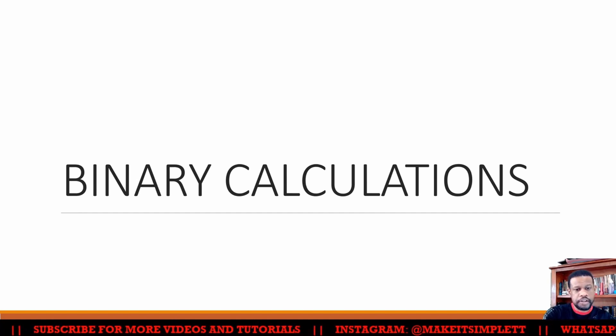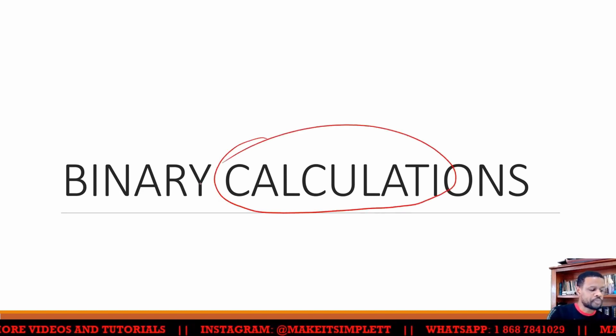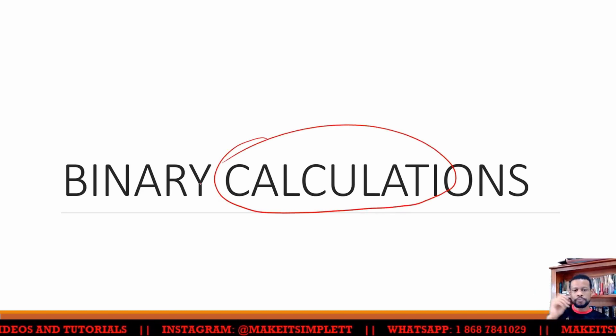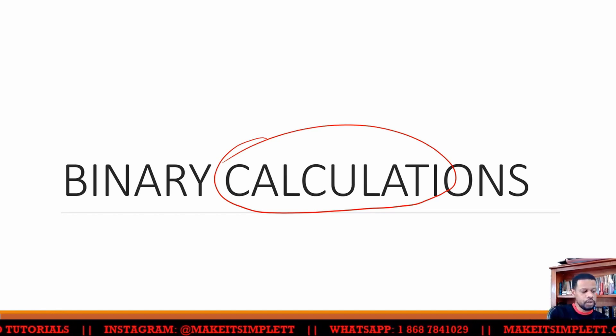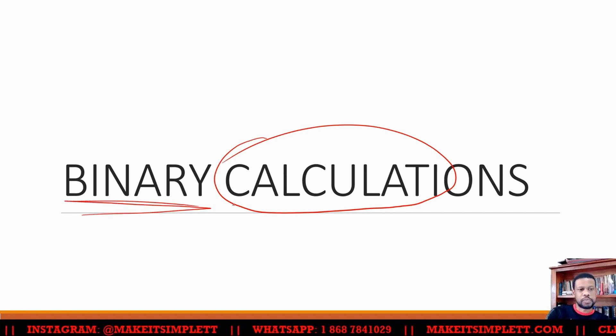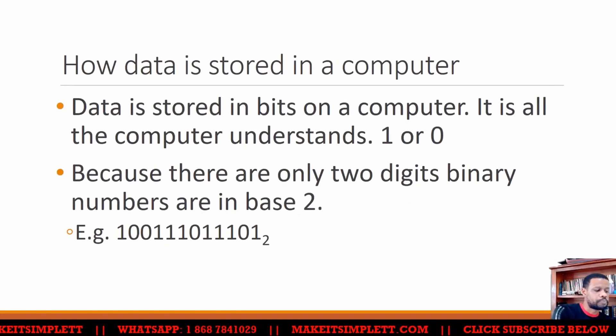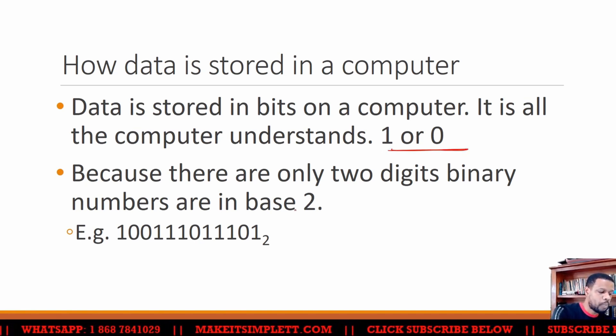The first thing that we always have to remember is that our computer all really tries to do is binary calculations. That's all that the ALU does, right? So we're working on binary calculations. And data is stored in our computer in bits, either 1 or 0. Because 1 or 0 only has 2 bits, the computer operates in base 2.